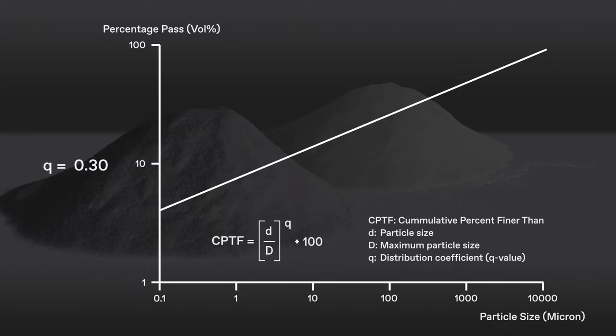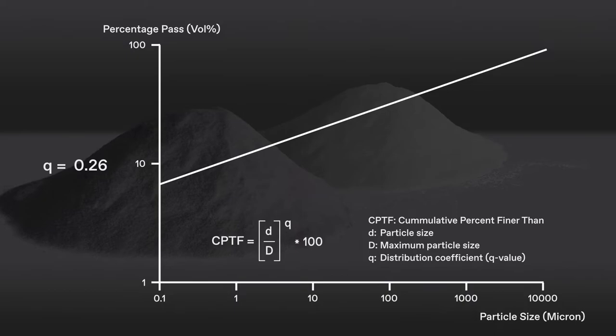Self-flowing castables need lower Q values than vibration flow castables and require increased microsilica content to achieve the desired result.